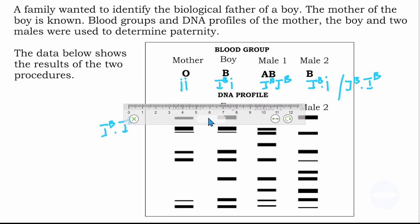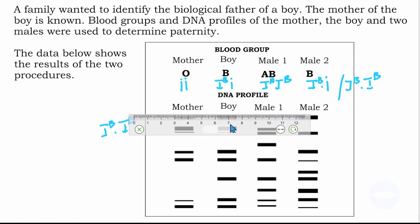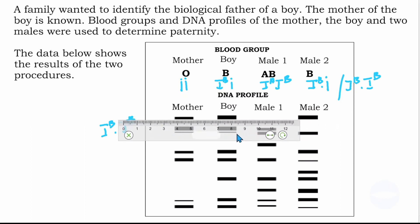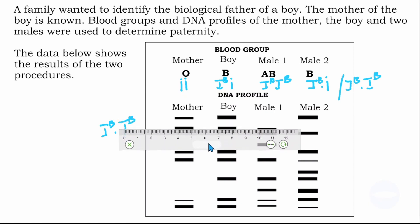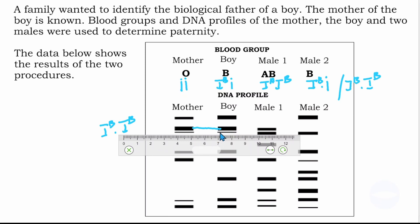Here I have a ruler. We use the bands from the boy and compare with other people. Starting with the boy and male 1: the first band does not match — this one is thin and that one is a little bit thick. Going down, the next band of the boy does match with male 1's band, so we draw a line. The next thin band also matches, so we draw another line. Then another band is thick while the corresponding one is a little bit thin — they do not match. The next one does match, so we draw a line again.